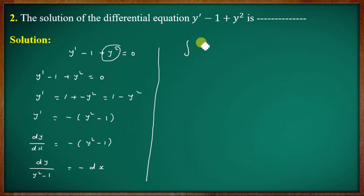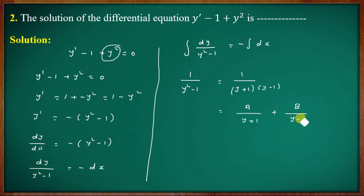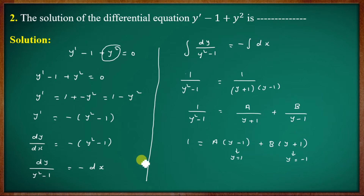Integrating both sides: integral of dy/(y² - 1) = -integral dx. Using partial fractions: 1/(y² - 1) = A/(y+1) + B/(y-1). So y² - 1 = A(y-1) + B(y+1). We need to find the values of A and B.